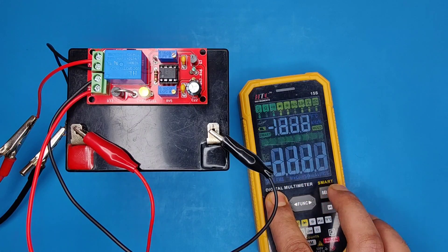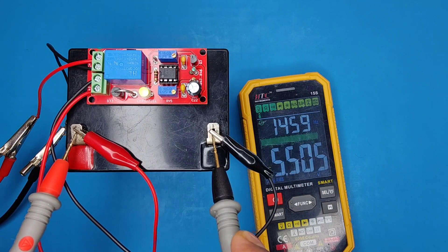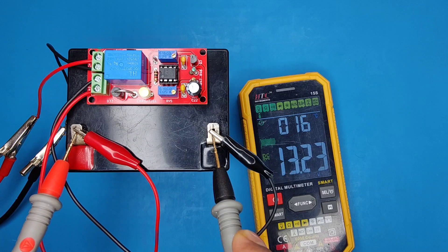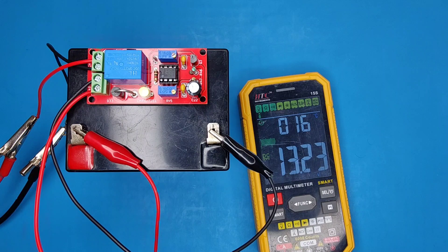So let's check the voltage with multimeter. As you can see it is 13.2 volts. And when voltage will drop to 12.5 volts, charging will turn on automatically.